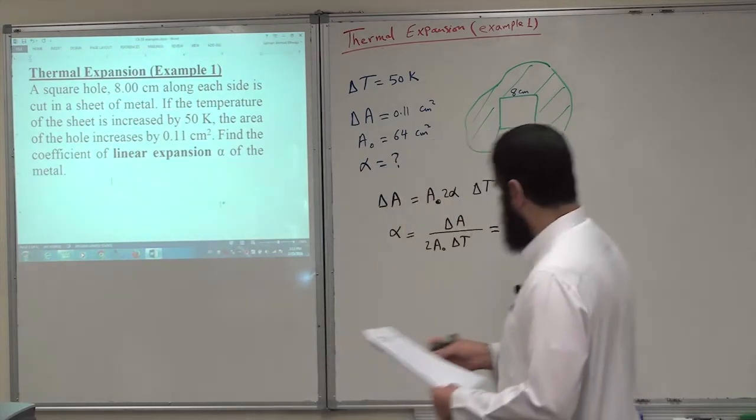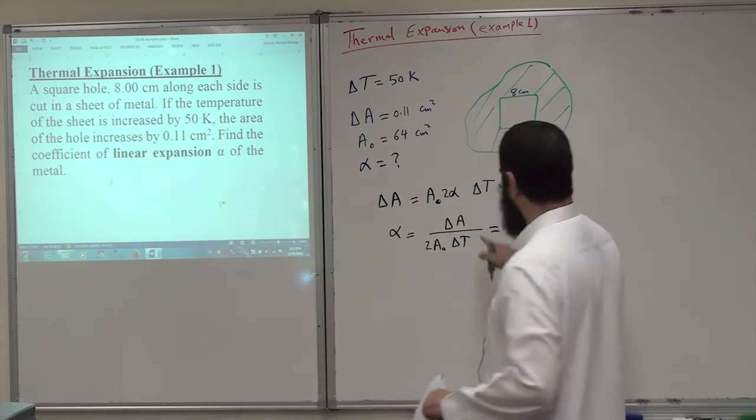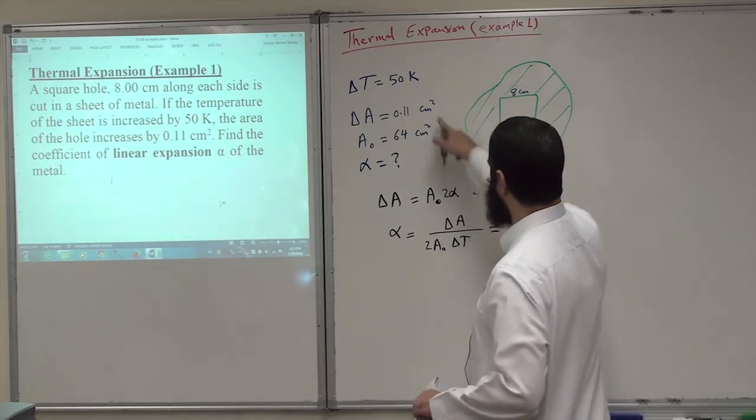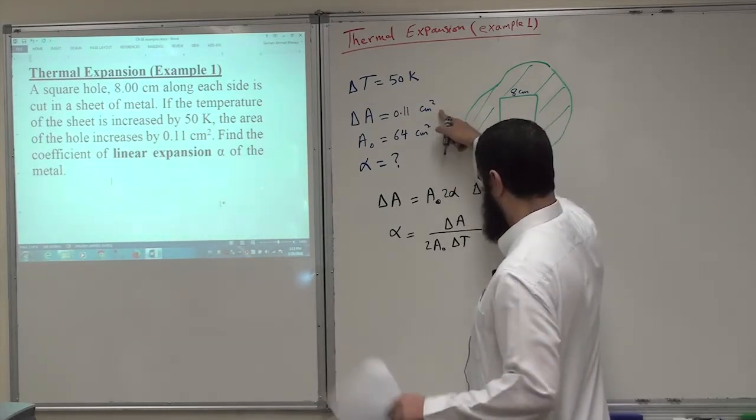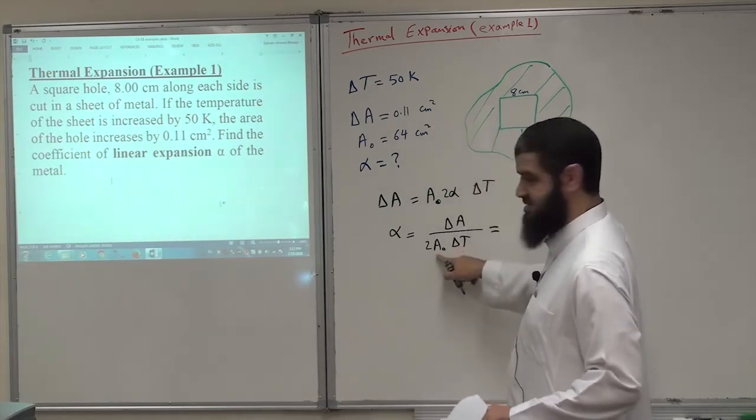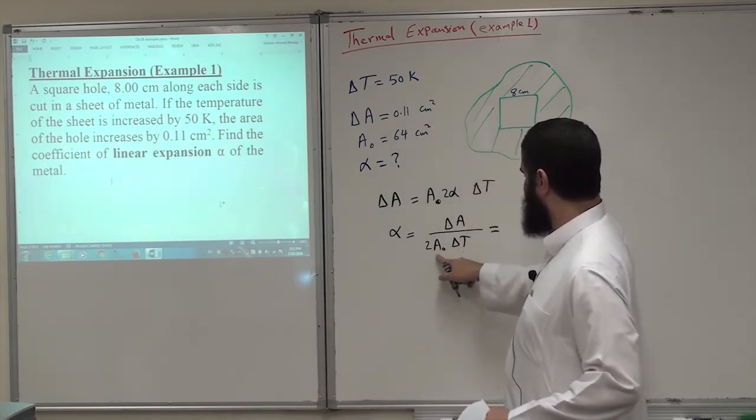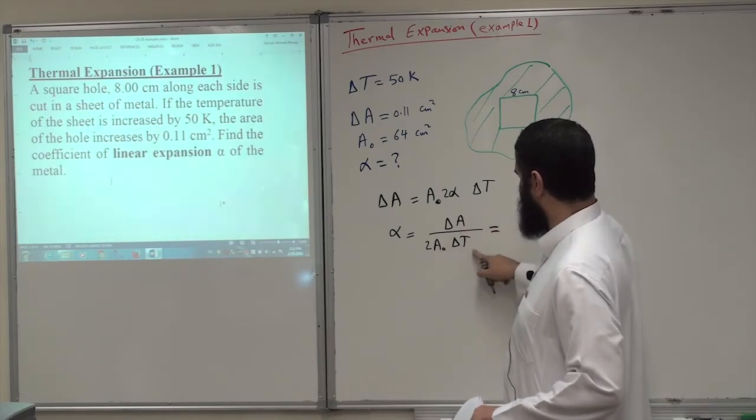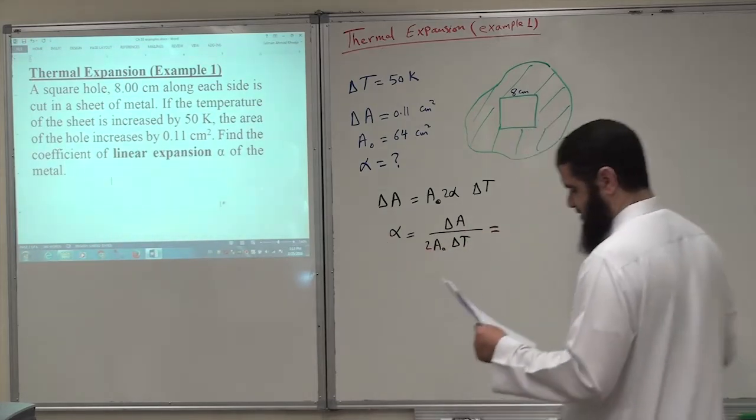What do you think here? Should we convert delta A from centimeter squared to meter squared? You are right. No need because here I have centimeter squared. This is centimeter squared. And we are left with 1 over degree C, which is the correct unit for alpha.